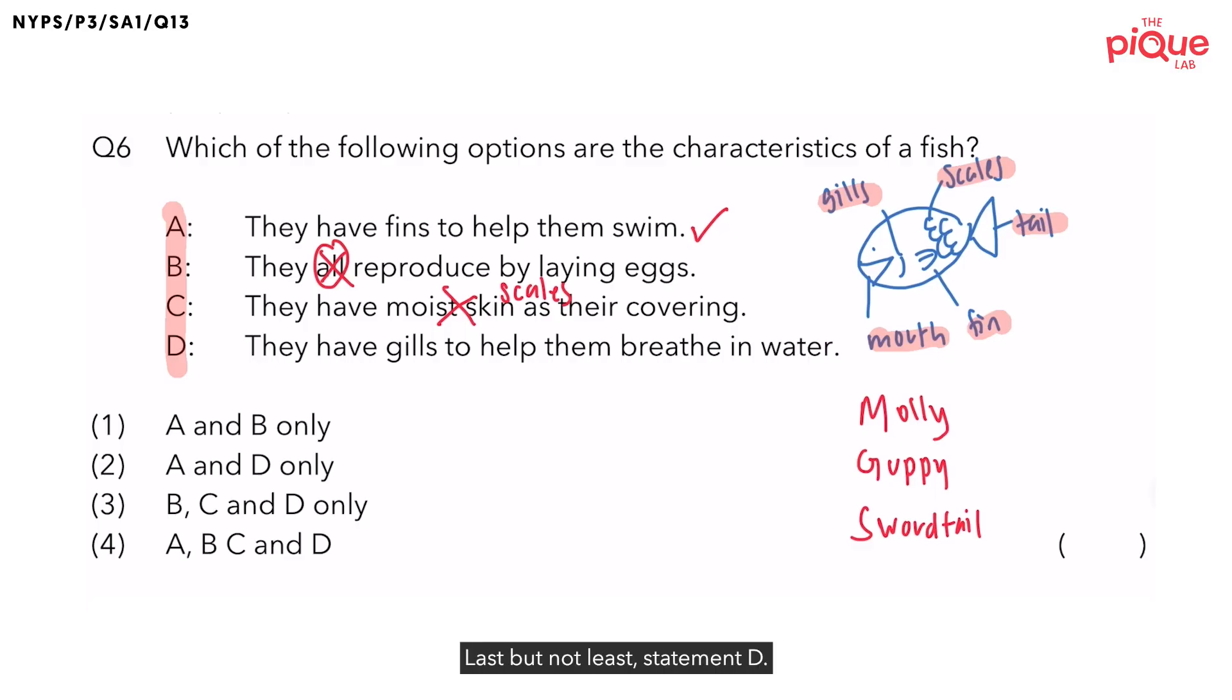Last but not least, statement D. Is it true that fish have gills to help them breathe in water? This is true. Earlier, we have already talked about the function of the gills, which is to help the fish to breathe in water. Hence, I'll put a tick over here.